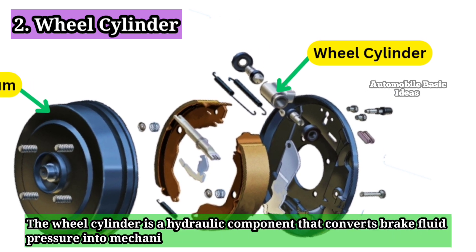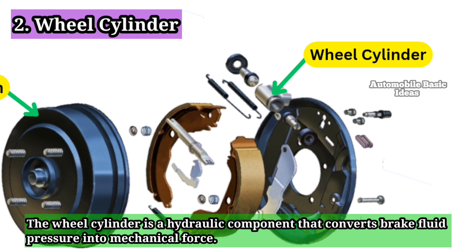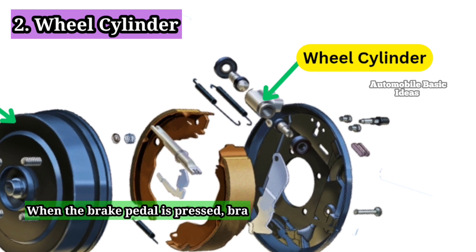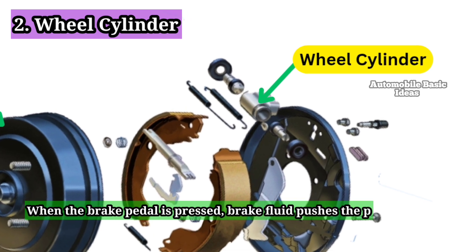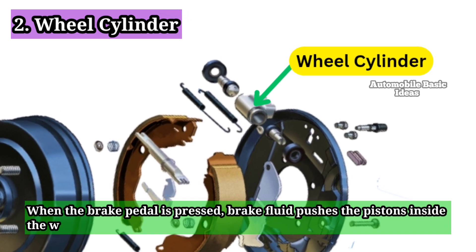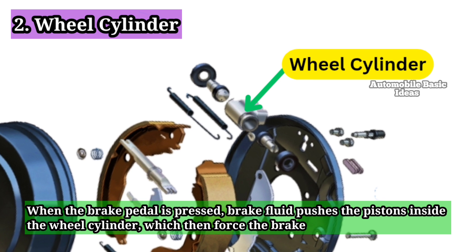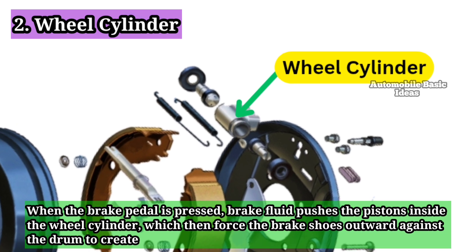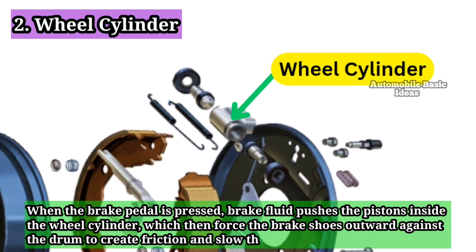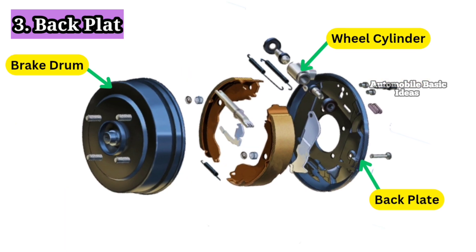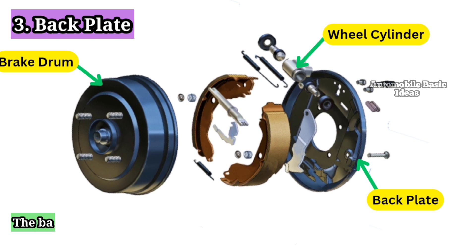2. Wheel cylinder. The wheel cylinder is a hydraulic component that converts brake fluid pressure into mechanical force. When the brake pedal is pressed, brake fluid pushes the pistons inside the wheel cylinder, which then force the brake shoes outward against the drum to create friction and slow the vehicle.